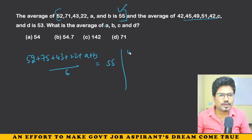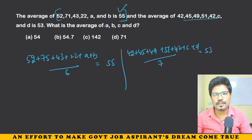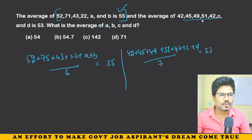Next: 42 plus 45 plus 49 plus 51 plus 42 plus C plus D, divided by 7, is equal to 53. Count the numbers: 1, 2, 3, 4, 5, 6, 7. This is it.